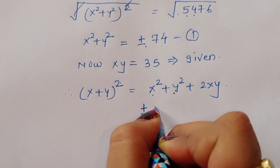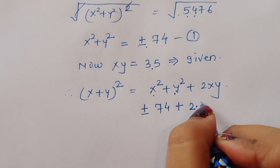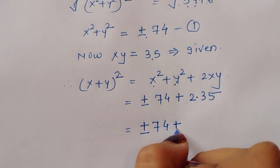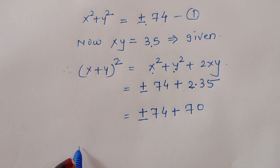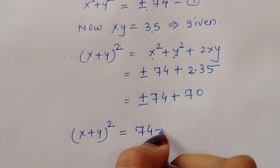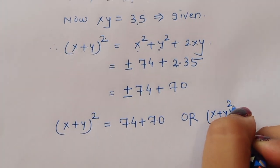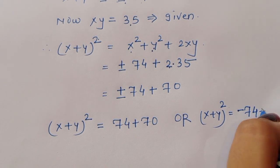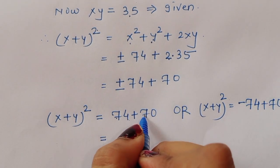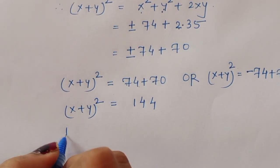So x plus y whole square equals x squared plus y squared plus 2xy, which equals plus or minus 74 plus 2 times 35, that is plus or minus 74 plus 70. Therefore x plus y whole square equals 74 plus 70, or x plus y whole square equals minus 74 plus 70.